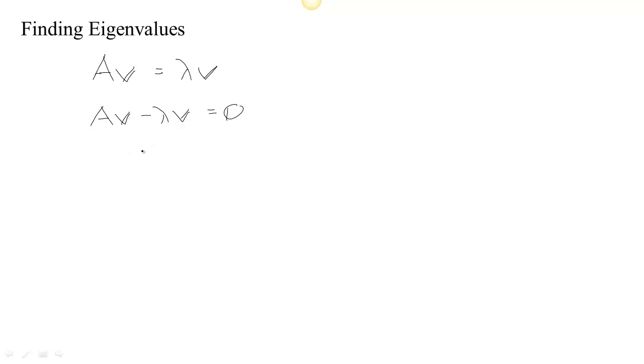Now that we've got that, we could actually think about writing this as a matrix times a vector. So I'm going to think about this scalar lambda times V as the identity matrix times V. Now we can factor out the V because we have a matrix times this vector.